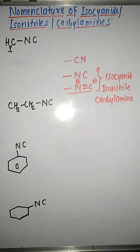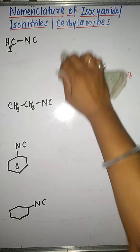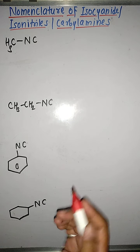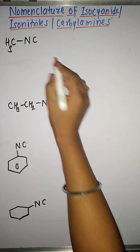Now in this case you have another thing: cyanides and isocyanides are functional isomers of each other. Then we will see the nomenclature of isocyanides or isonitriles.